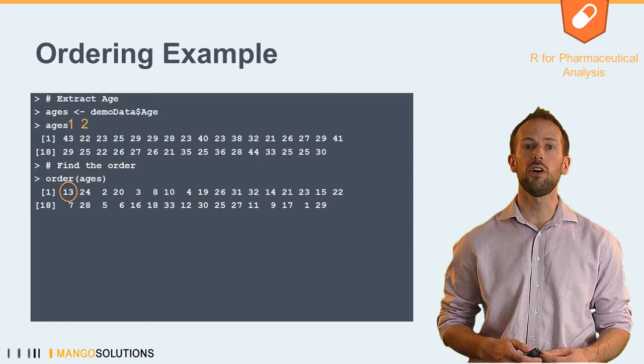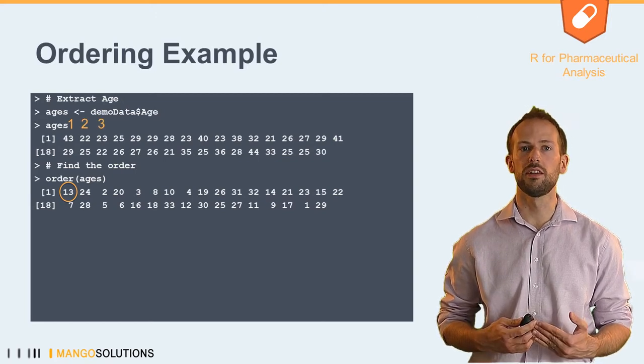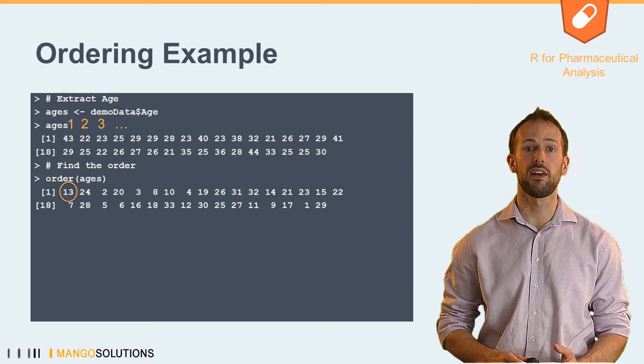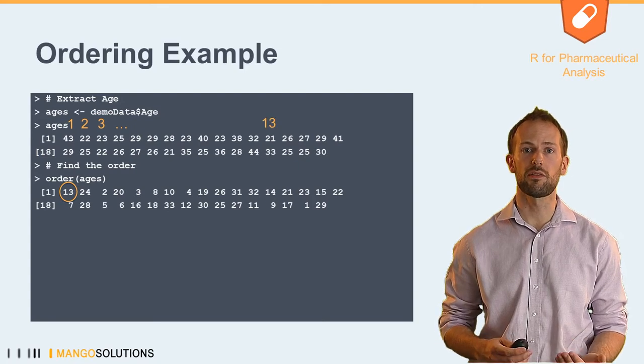So in this example, the first number returned is 13. This means that the lowest value in the age column is the 13th value.